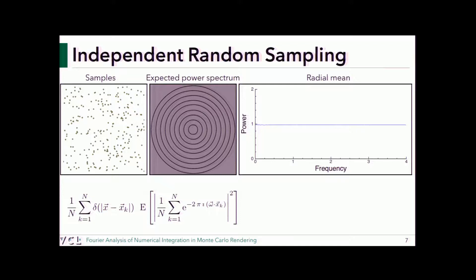We've reduced the 2D expected power spectrum to a 1D plot just for convenience: frequency is on one axis, power on the other, so we don't have to distinguish between shades of gray.